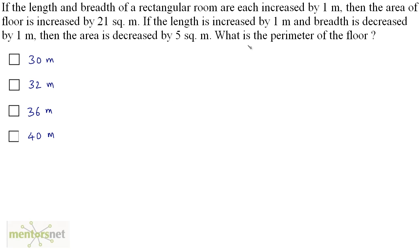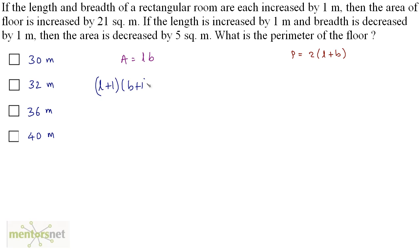We have been asked: what is the perimeter of the floor? Perimeter is equal to twice of length plus breadth. Now we know area is equal to length times breadth, so A equals L times B. If the length and breadth of the room are increased by 1 meter, the area is increased by 21 square meters. So, L plus 1 times B plus 1 equals A plus 21.